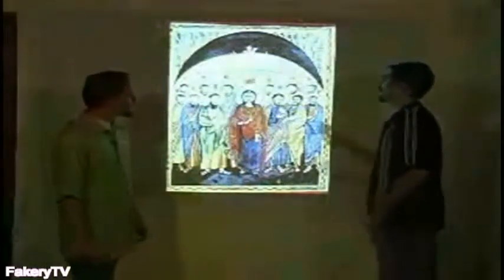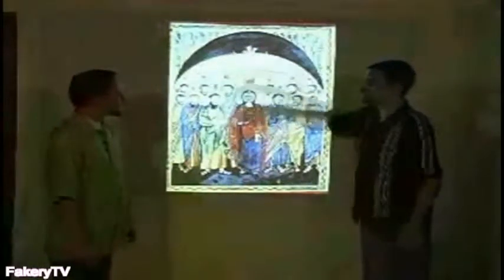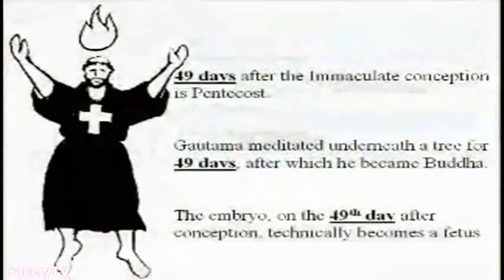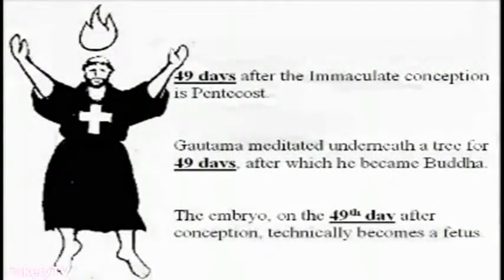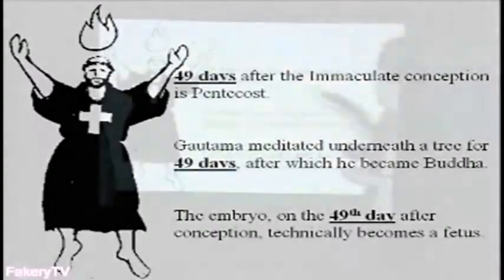This is where we get the terms 'archbishop' and 'architecture.' 49 days after the Immaculate Conception is Pentecost. Gautama meditated underneath the tree for 49 days, after which he became the Buddha. The embryo technically becomes a fetus on the 49th day after conception. This 49-day period appears over and over again across traditions.